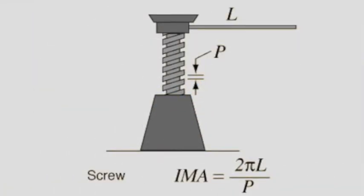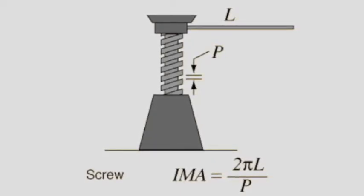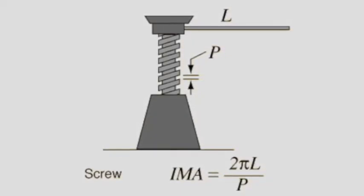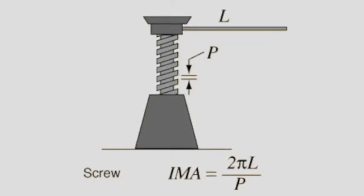The ideal mechanical advantage, or IMA, of a screw is modeled by the equation IMA = 2πL/P.